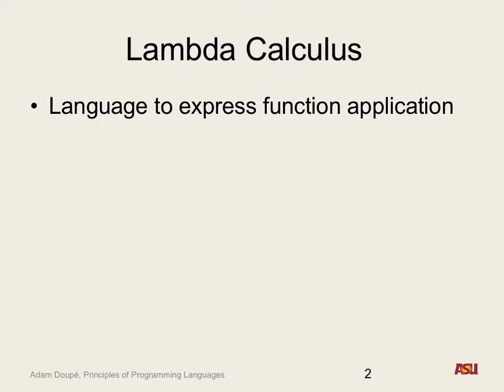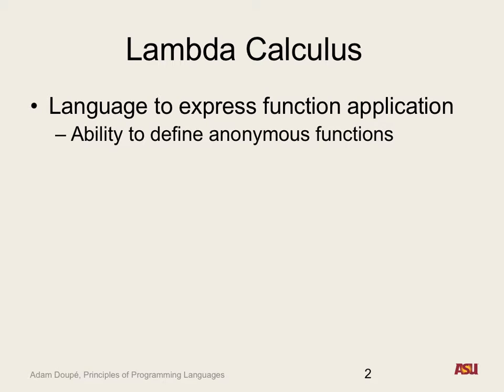Lambda Calculus, using just function applications — the only things available are calling functions and defining anonymous functions — has the same expressive power as a Turing machine, which also means the same expressive power as C or C++. It's crazy to see that the power of computation can be reduced to just function applications. In Lambda Calculus we can define anonymous functions and apply functions — that's it, those two things — and that's all you need to express computation.